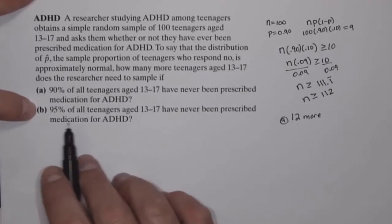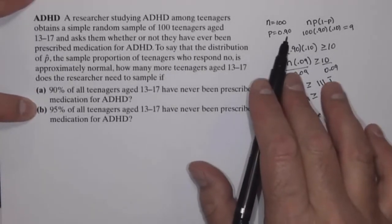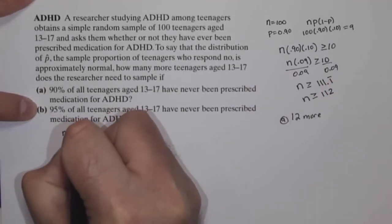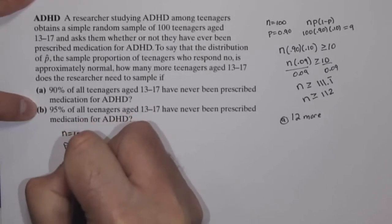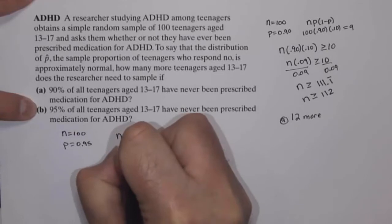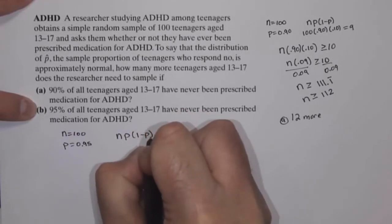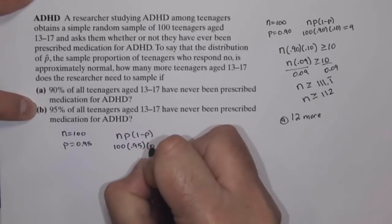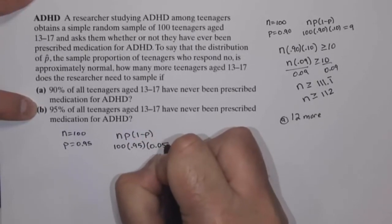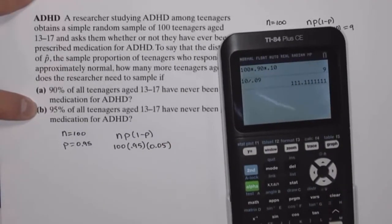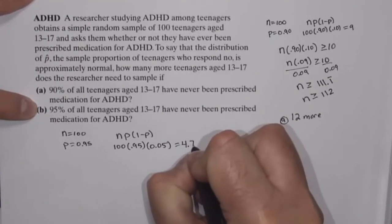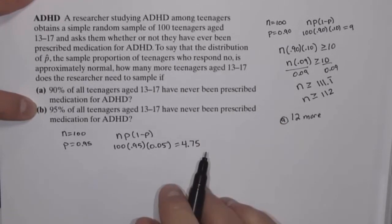Now, Part B: we're doing the exact same thing except instead of p being 0.90, p is going to be 0.95. So again, we start with a sample of 100, and if p equals 0.95, then n times p times (1 minus p) would be 100 times 0.95 times 0.05. That is 4.75, which is way below 10, so we would not be able to say that we have a normal distribution.